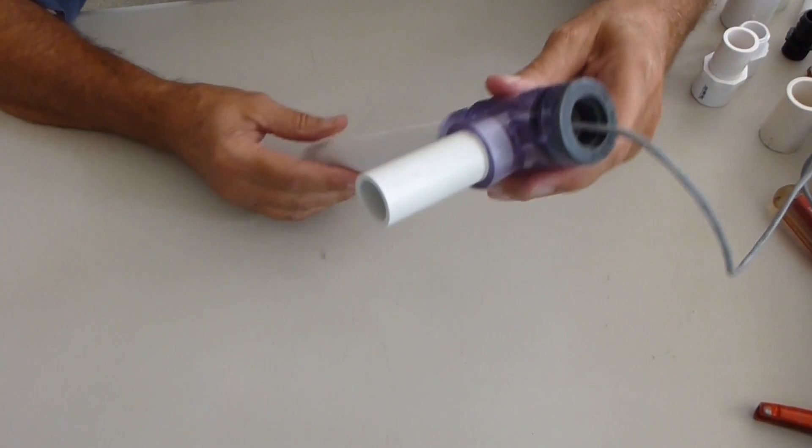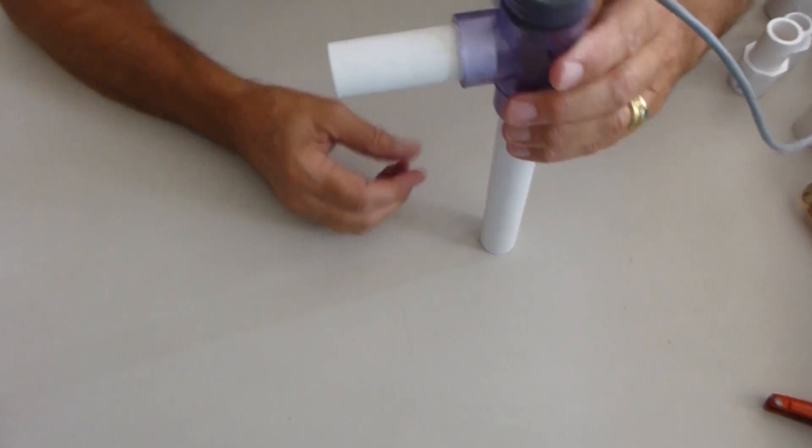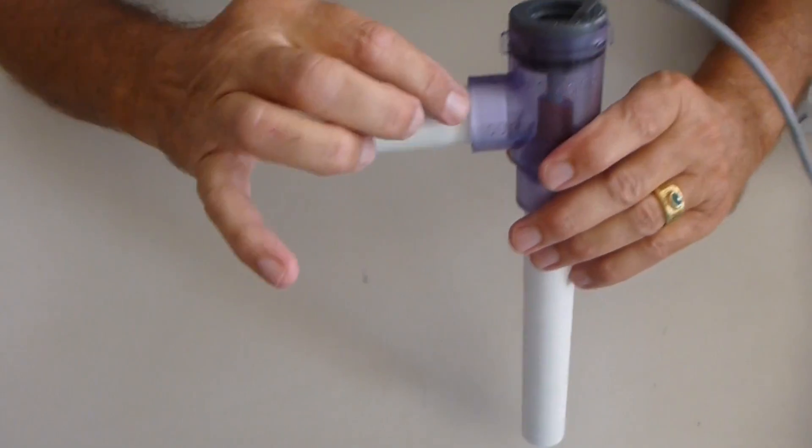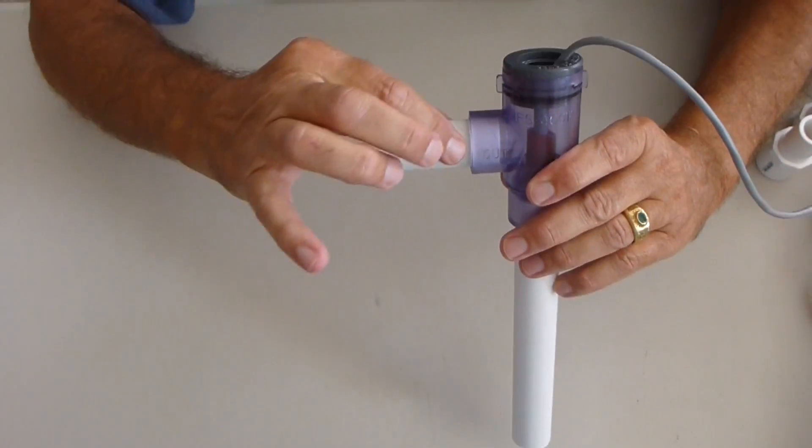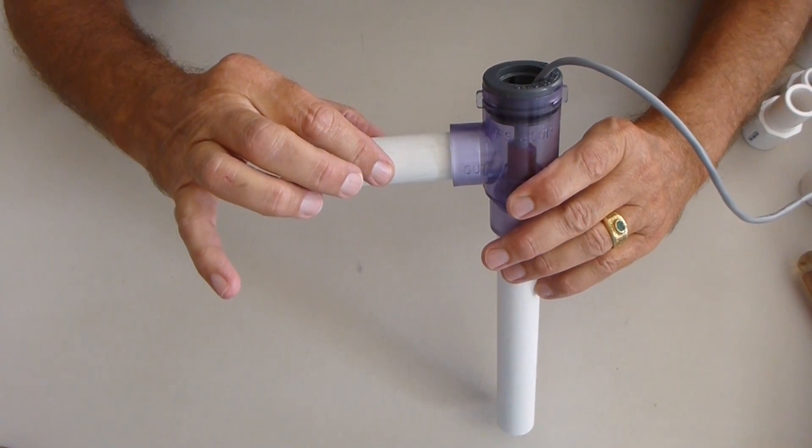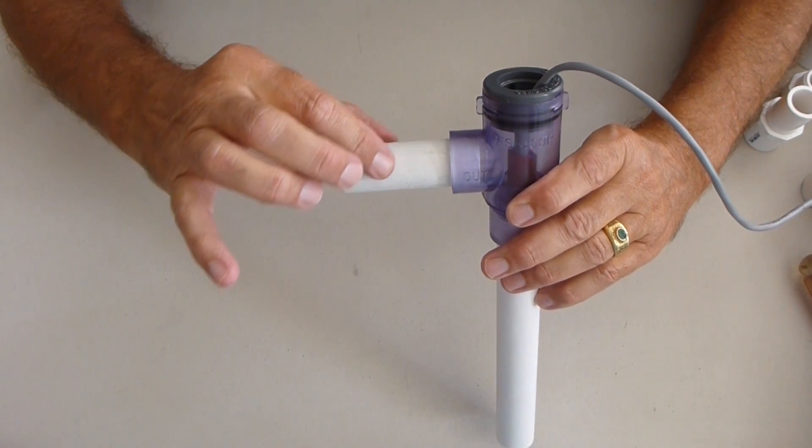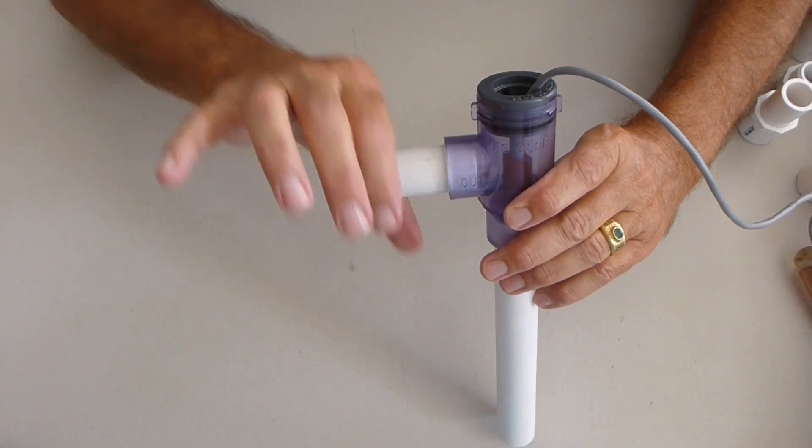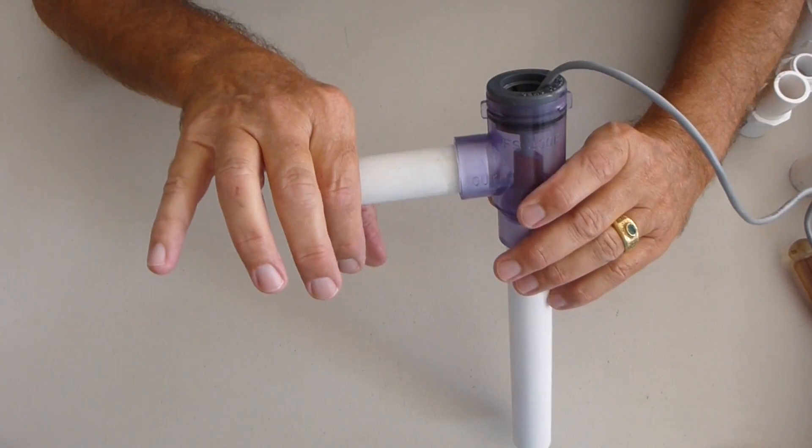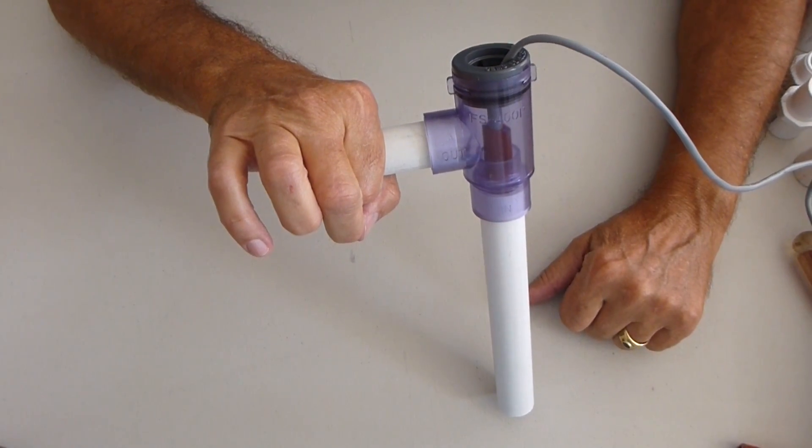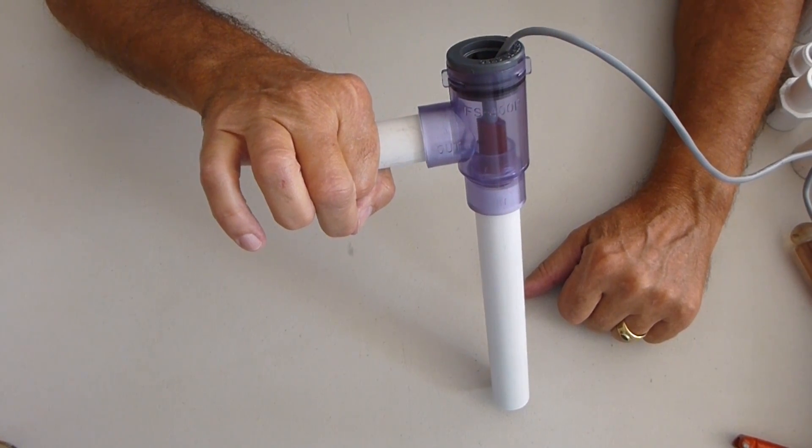This particular type of flow switch I would generally install at this being the last joint between the piping and the filter. In other words, the filter itself would be in this location, and I would just normally glue it right into place in the back of the filter.